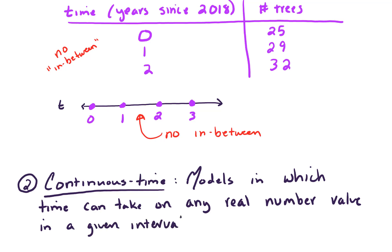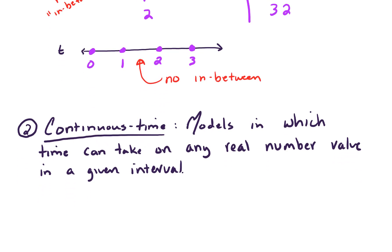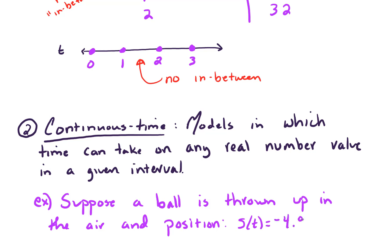As an example, suppose a ball is thrown into the air, and maybe the position of the ball, there's no jumping around. The ball smoothly goes up and falls back down. Maybe your position function is given by some equation like s(t) = -4.9t² + 39.2t.